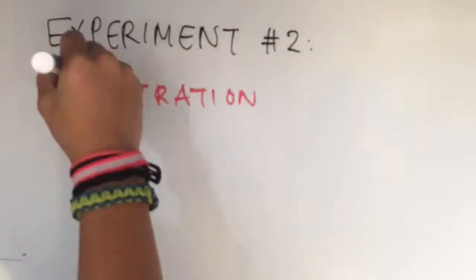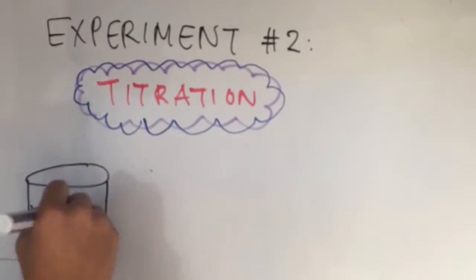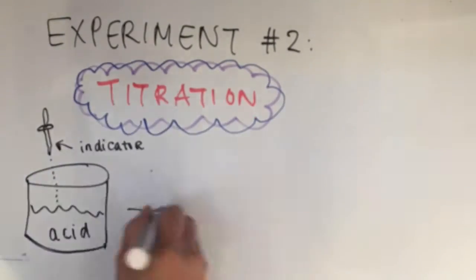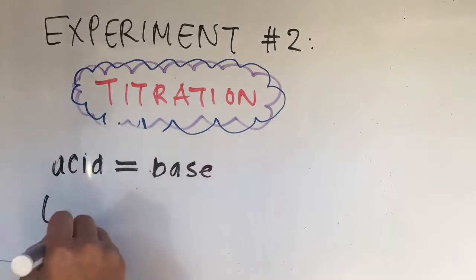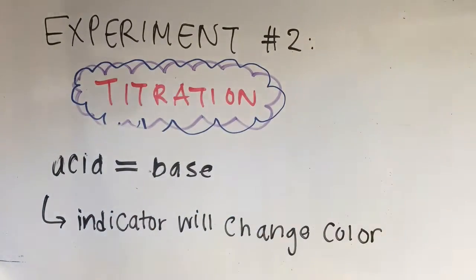The second way is to use titration. You take an acid, put a few drops of indicator in it, and then start adding base until the indicator changes. If you keep track of the amount of base added, you can determine when the amount of base and acid are equal.